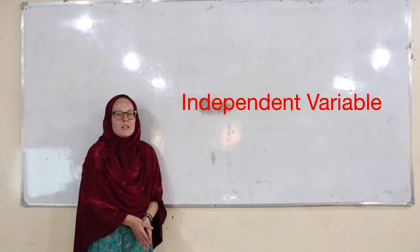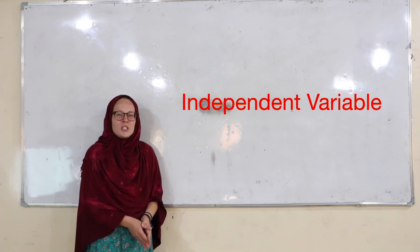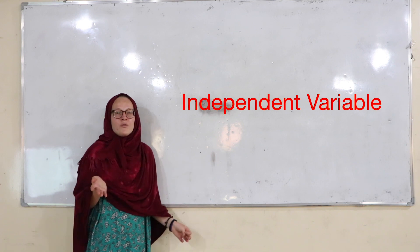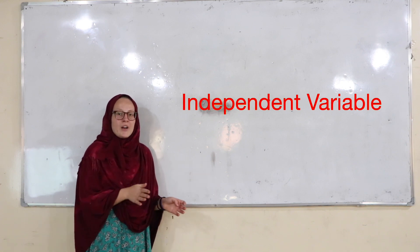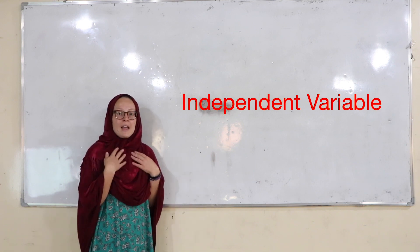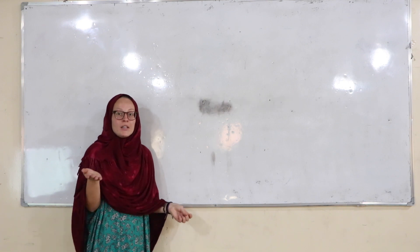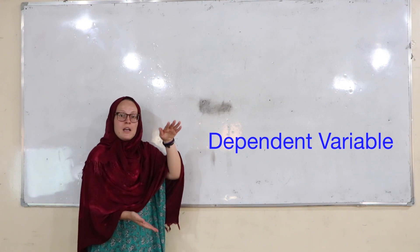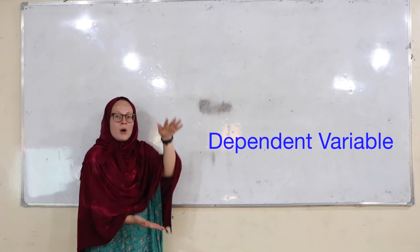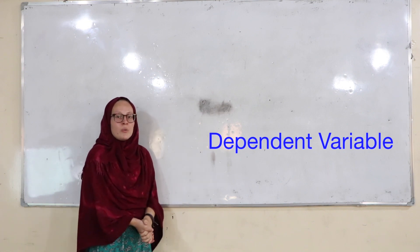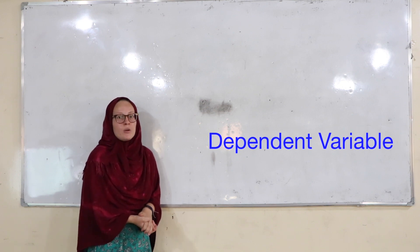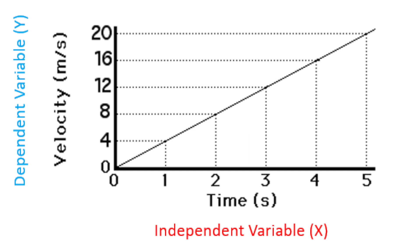If we were to do an experiment where we tested how much plants grew based on how much fertilizer we gave them, the amount of fertilizer would be the independent variable, as this is something that we as the scientists can physically change. The dependent variable would be the amount of growth of the plant, as this is the thing that is responding to the independent variable. If we were to make a graph, the dependent variable would always be on the y-axis as it's changing in response to the independent variable.